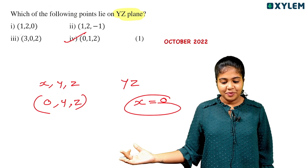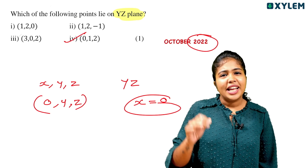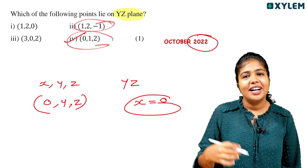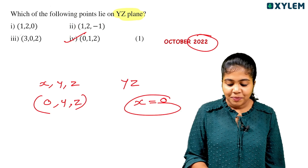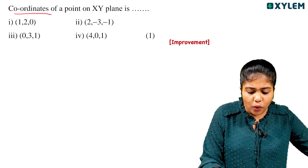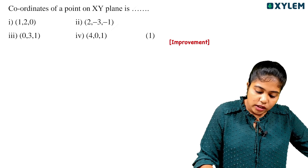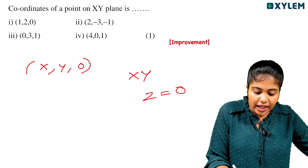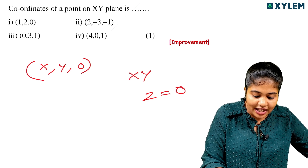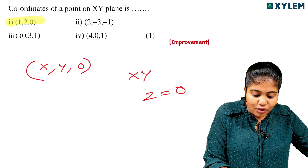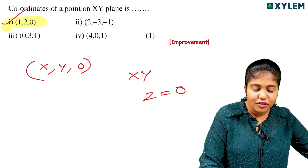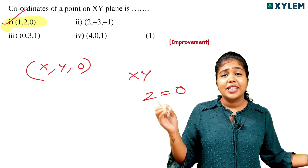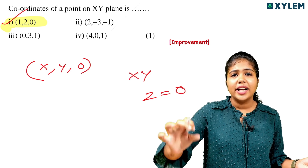This is a 1-mark question. In 2022, there is the same latest question about which point lies on the YZ plane. If the point lies on the YZ plane, the format is (0, y, z) — the first option is the right answer. That is the first concept: the coordinates of a point in space.